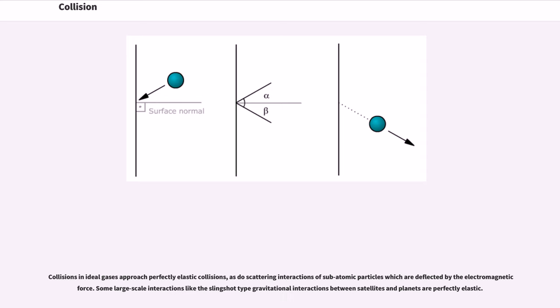Collisions in ideal gases approach perfectly elastic collisions, as do scattering interactions of subatomic particles which are deflected by the electromagnetic force. Some large-scale interactions like the slingshot-type gravitational interactions between satellites and planets are perfectly elastic.